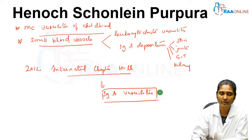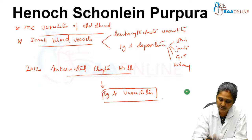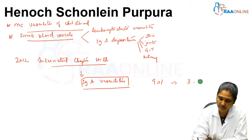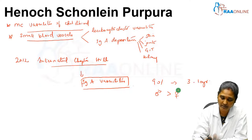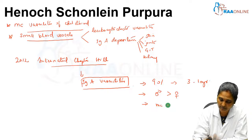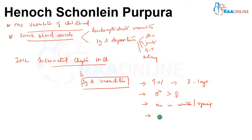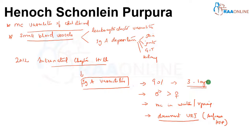In 90 percent of children, the common age group is between 3 to 10 years, with a slight male preponderance — males are more commonly affected than females. HSP nephritis is seen more commonly in winter and spring seasons, and rarely in summer. Usually there is a documented upper respiratory infection (URI) prior to the onset of HSP.